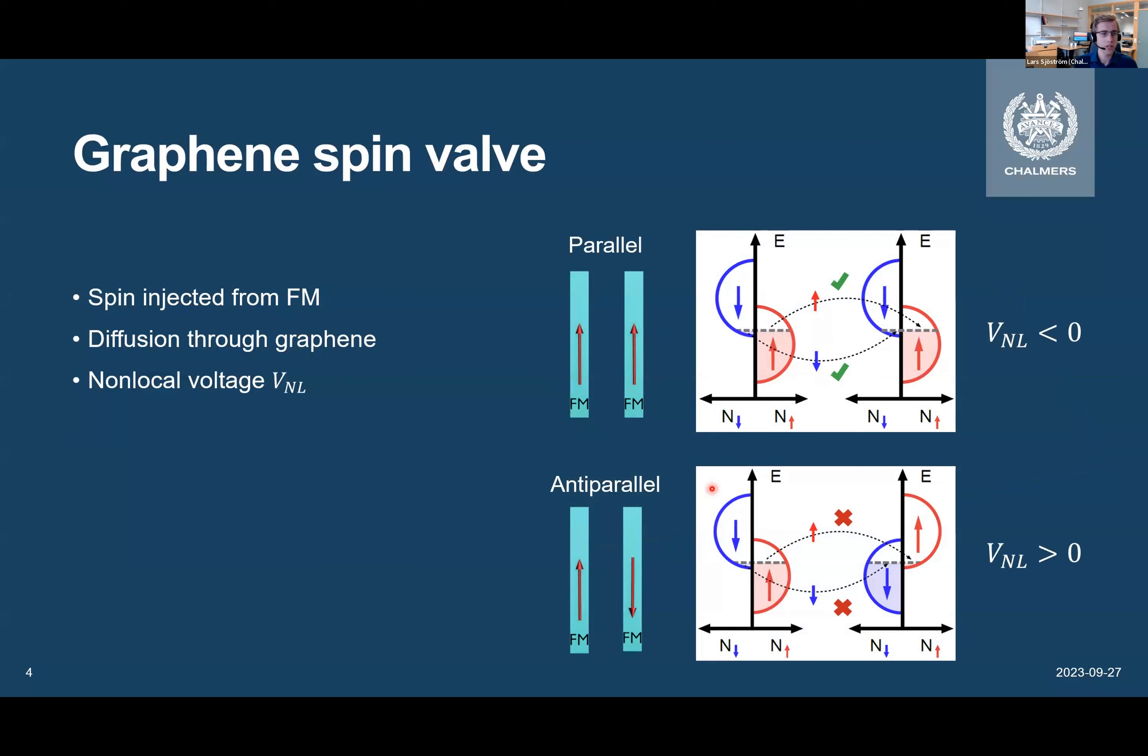Actually, this works quite similarly to a magnetic tunnel junction, because if both of these contacts are parallel, it will be easy for the spins that are injected from this contact to be detected by this one. So we have a negative non-local voltage, but in contrast, if these two contacts are antiparallel, then the injected spins won't easily be absorbed by the detector contact. So then we get instead a positive non-local voltage.